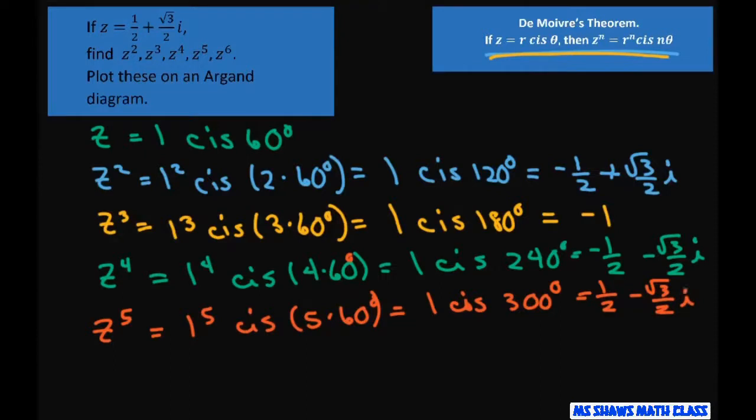Finally, z^6 equals 1^6 cis (6 × 60°), which equals 1 cis 360°, which equals 1. That's all we have to do—just using De Moivre's Theorem.